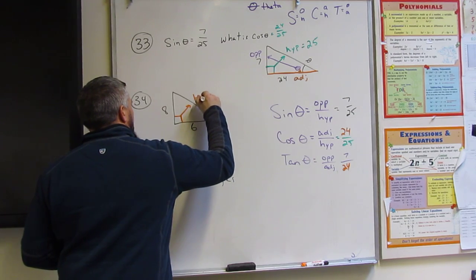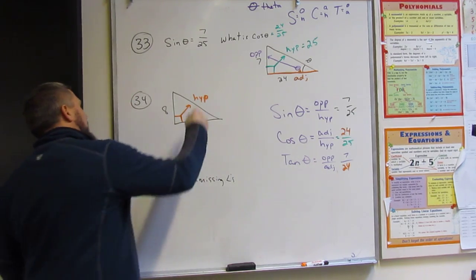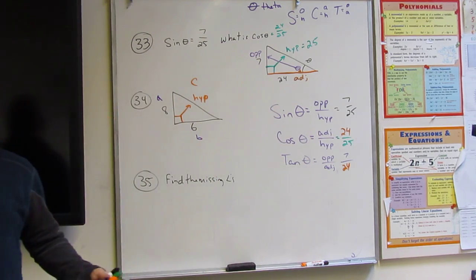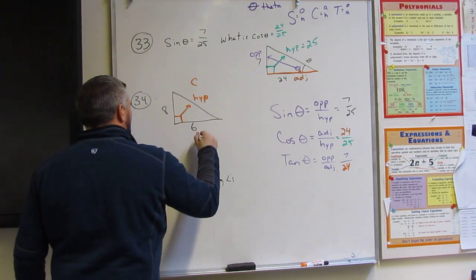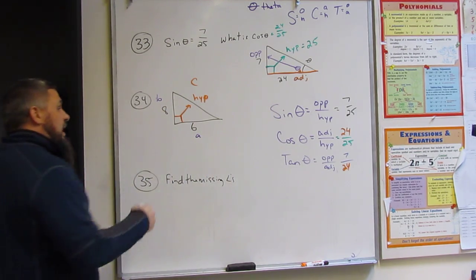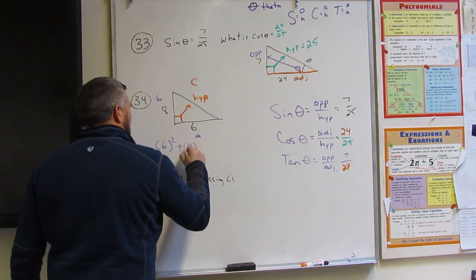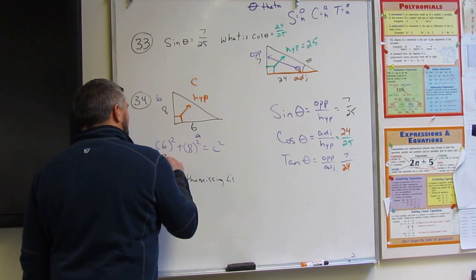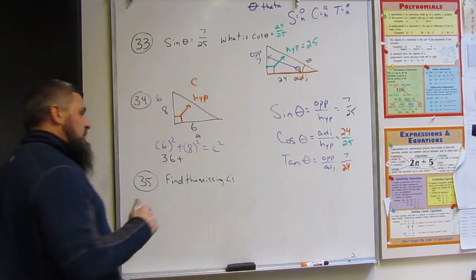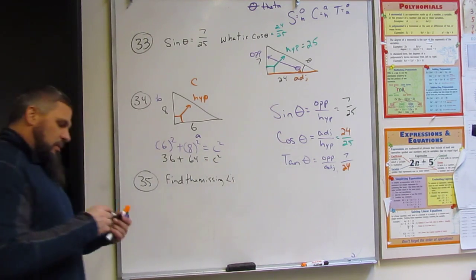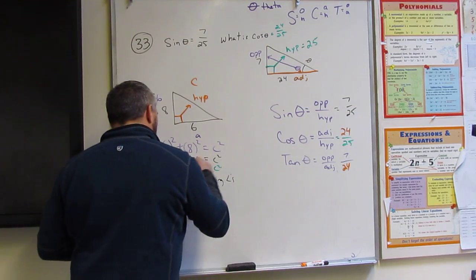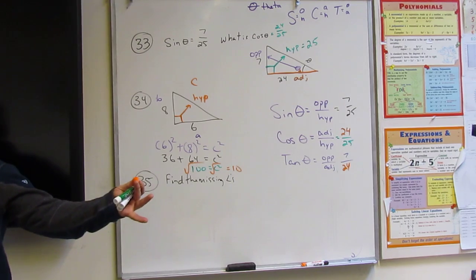Don't we also call it C? And A and B? Or A can be the smallest one if you want. So A squared, 6 squared, plus B squared, plus 8 squared, equals C squared. So what's 6 squared? 36. What's 8 squared? 64. And what's 36 and 64? 100. What's the square root of 100? 10.